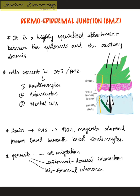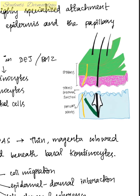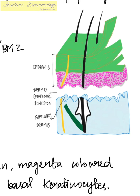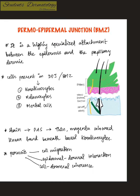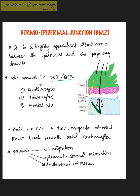In this video we are going to see about the dermo-epidermal junction, otherwise called the basement membrane zone. This is a specialized attachment between the epidermis and the papillary dermis. The cells present in the dermo-epidermal junction include keratinocytes, melanocytes, and Merkel cells. The functions of the dermo-epidermal junction include cell migration, epidermal-dermal interaction, and cell-stromal coherence.